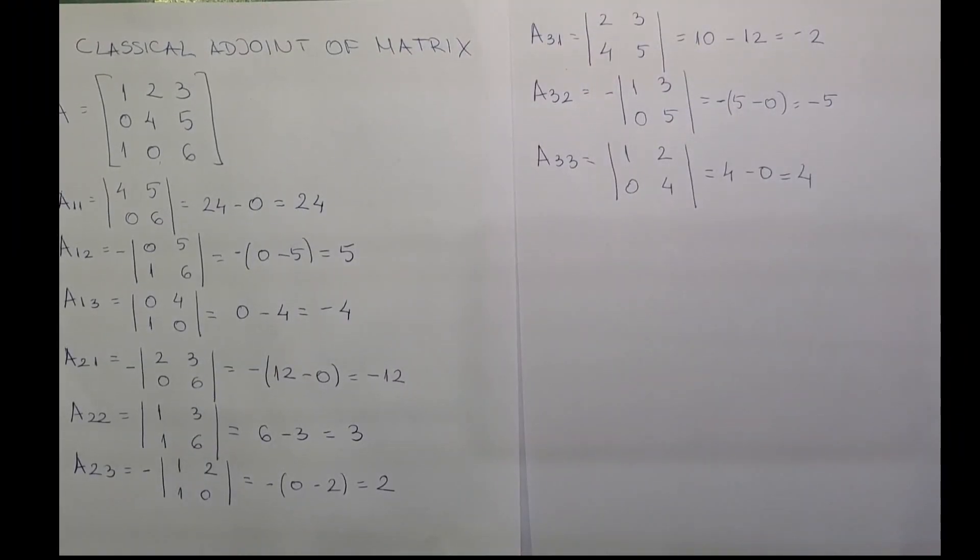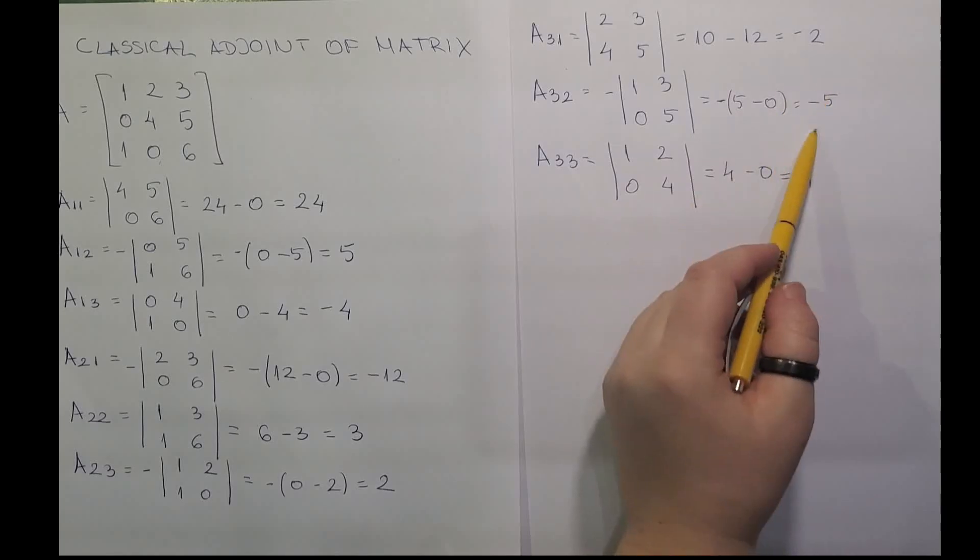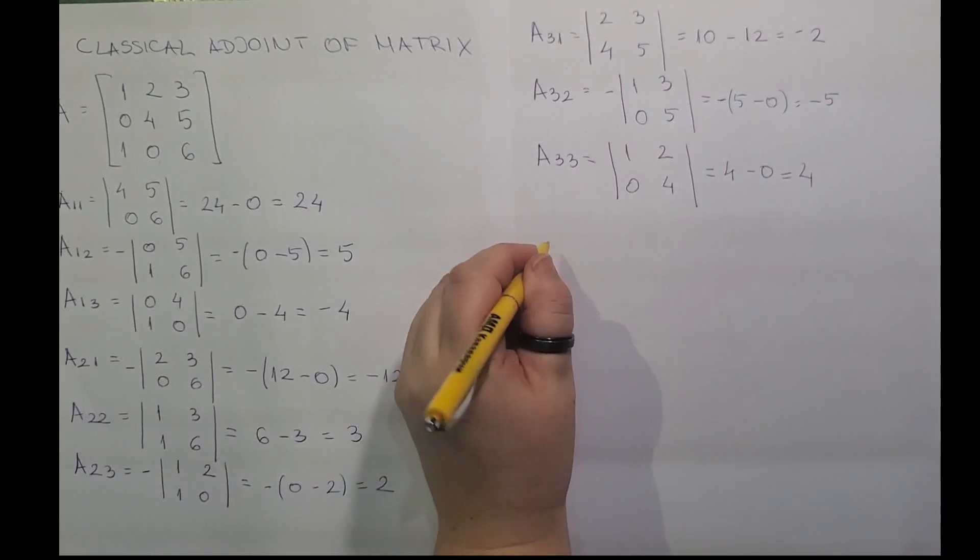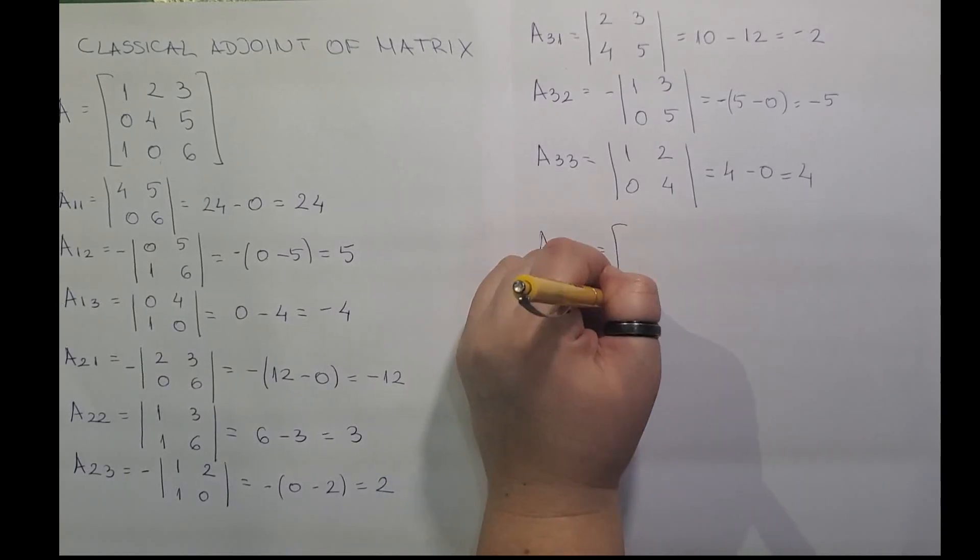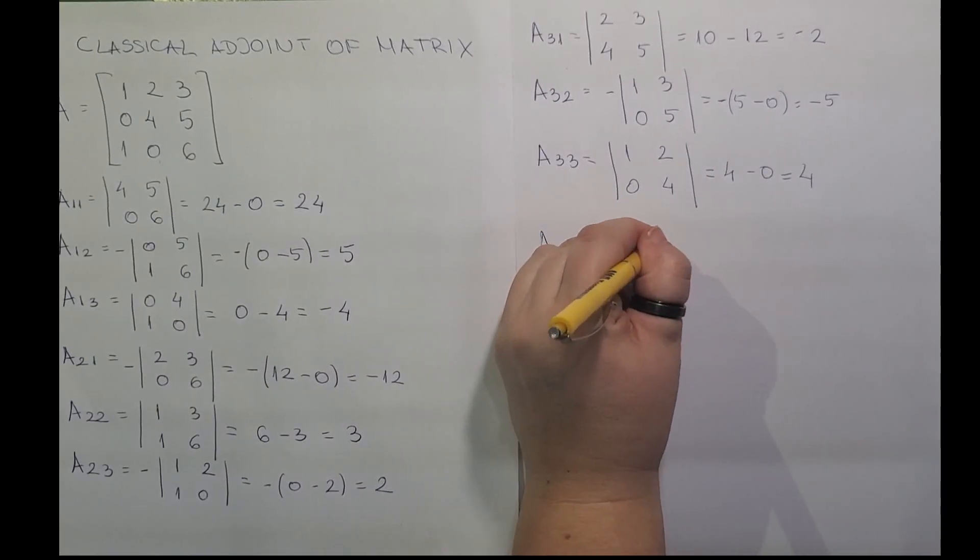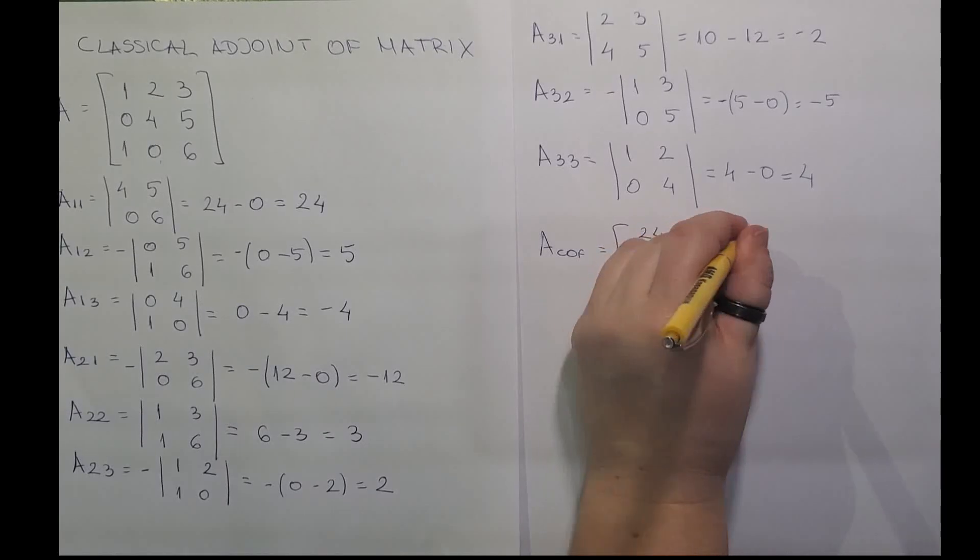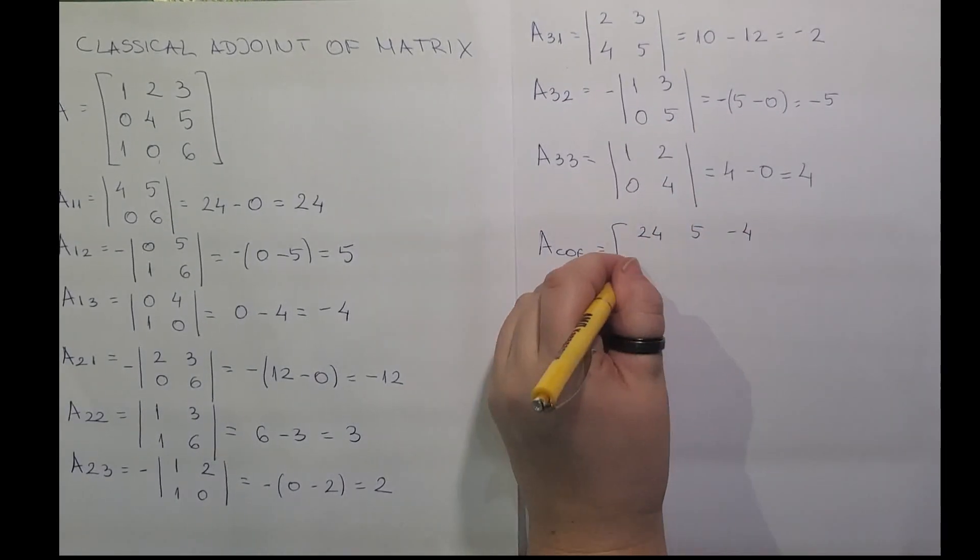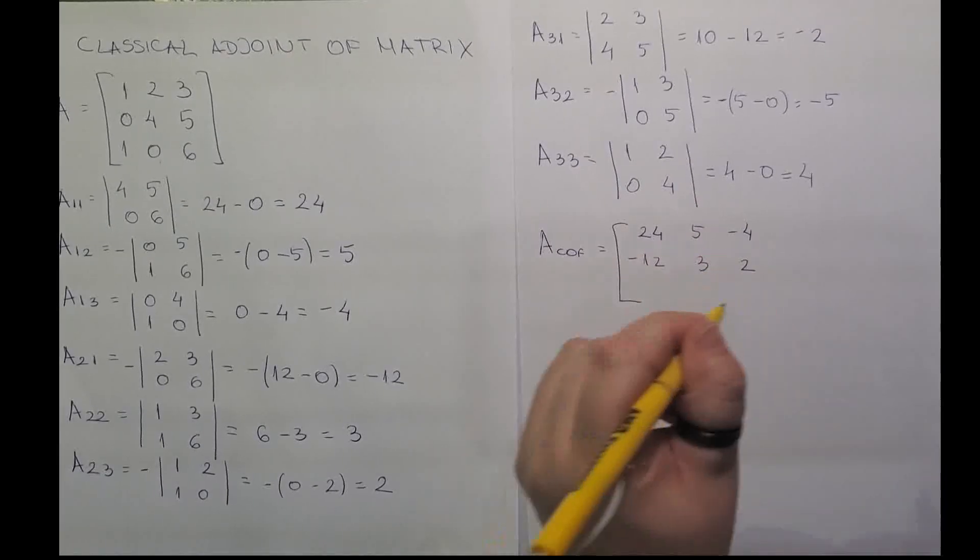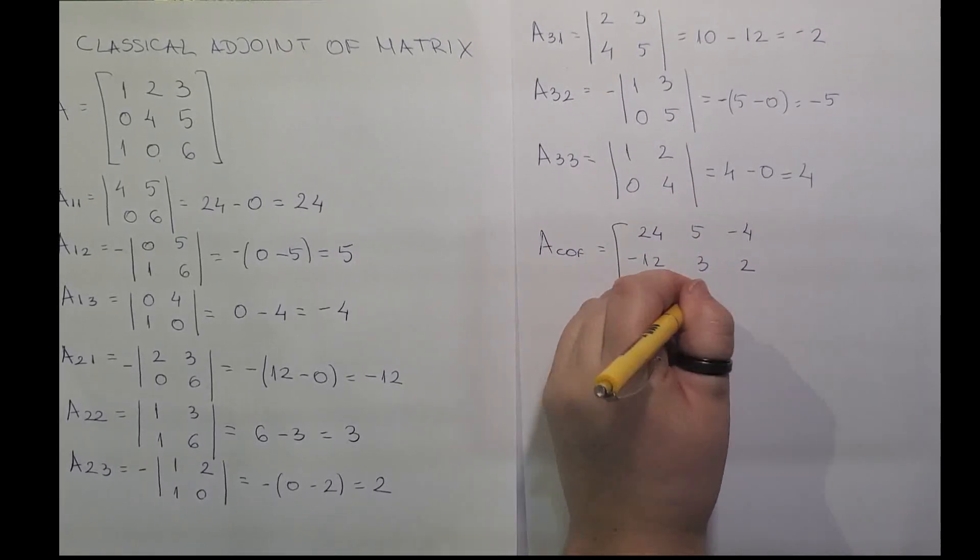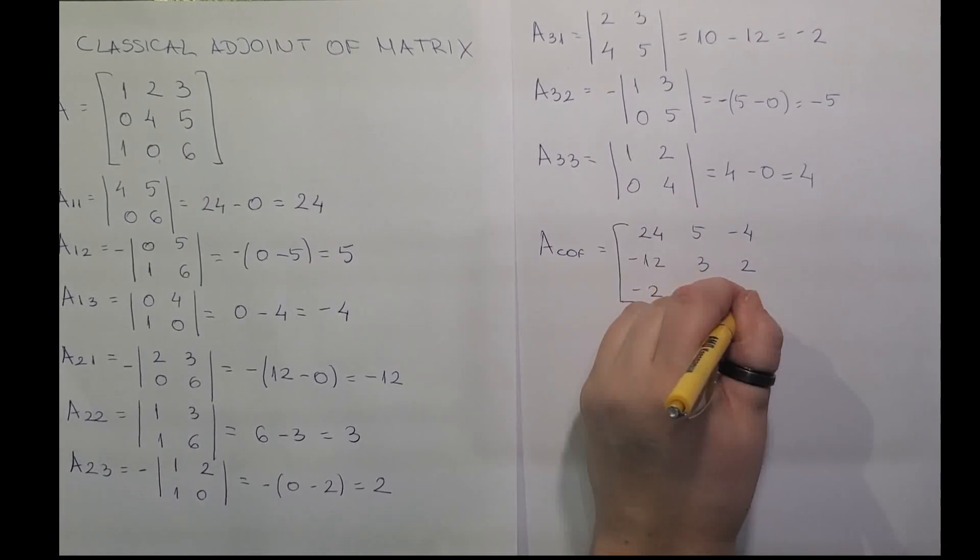Now as a result of this, the cofactor matrix of A is going to be these results in a matrix form. So we have A cofactor is equal to 24, 5, minus 4, minus 12, 3, 2, minus 2, minus 5, and 4.